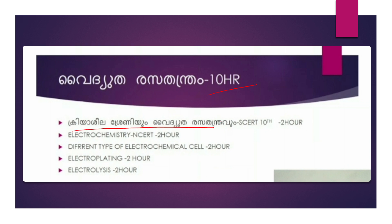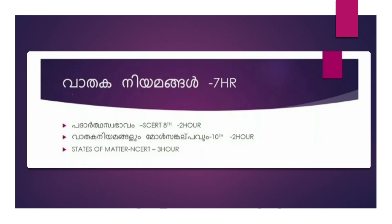The next chapter is electrochemistry. You will learn about different types of electrochemical cells and electroplating from the SCRT chapter. NCRT's electrochemistry chapter will also be covered. This is an important chapter in the course.